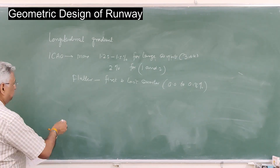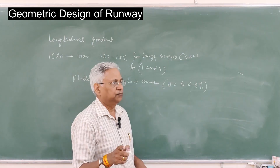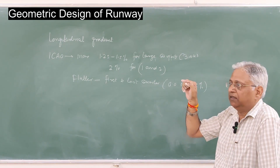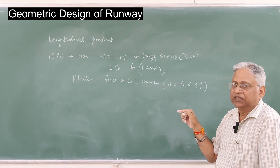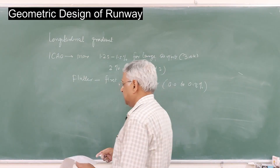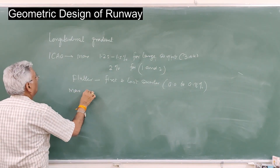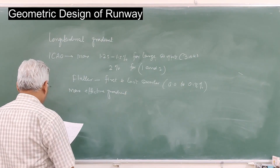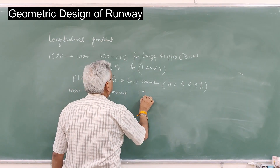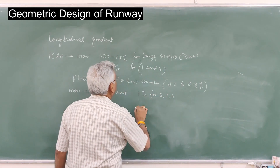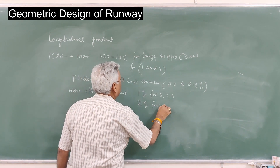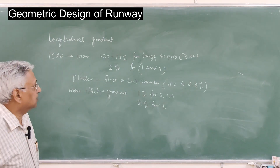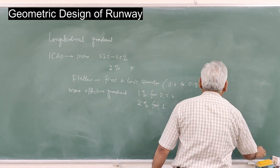The maximum effective gradient is also important. Effective gradient is defined as the RL of the highest point on the runway minus the RL of the lowest point, divided by the length of the runway — this is used to determine the corrected runway length. The maximum effective gradient suggested by ICAO is 1 percent for airport codes 2, 3, and 4, and up to 2 percent for small airports designated by code 1.